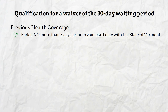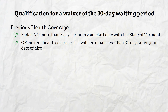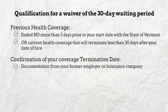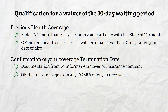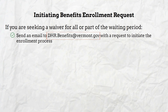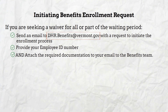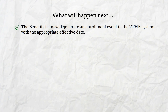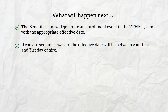You may be eligible to waive the 30-day waiting period if you have previous health coverage that ended no more than three days prior to your date of hire, or if you have current health coverage that will terminate less than 30 days after your date of hire. You will need to provide confirmation of your coverage termination date to the employee benefits unit — this could be a document from your former employer, insurance company, or the relevant page from any COBRA offer you received. To initiate a benefits enrollment request, send an email to the benefits team including your employee ID number and any required documentation.